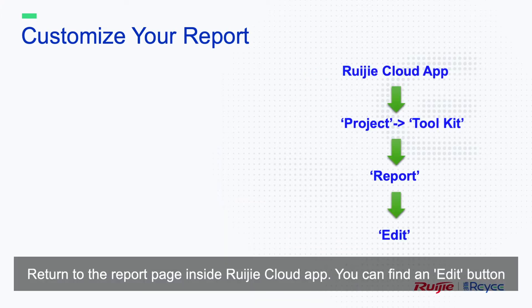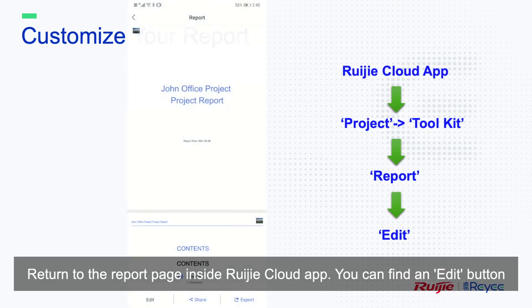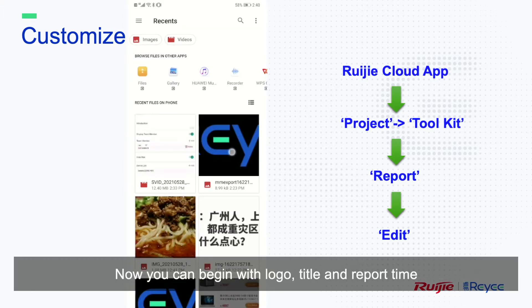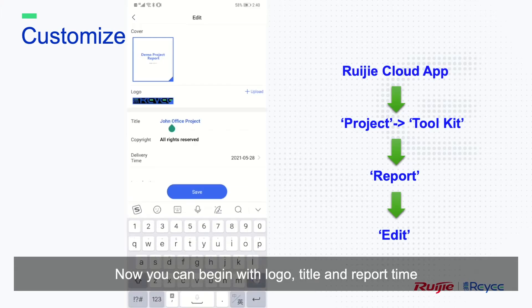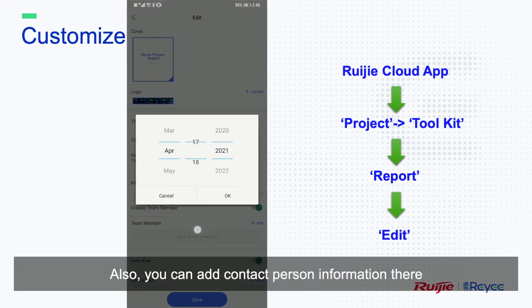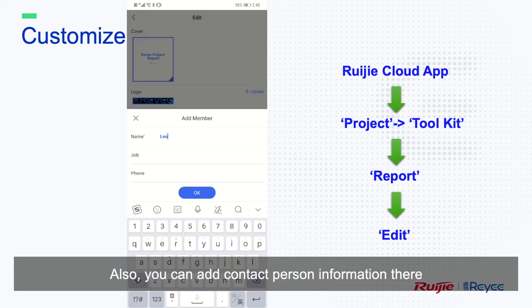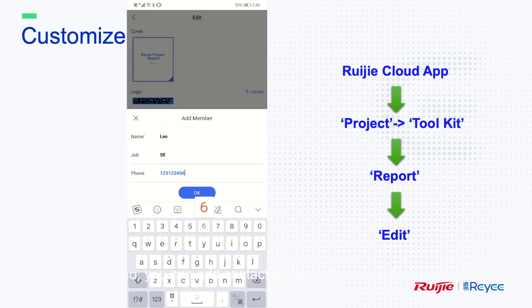Return to the report page inside the RG Cloud app. You can find an edit button there. Now you can begin with logo, title, and report name. Also, you can add contact person information there.